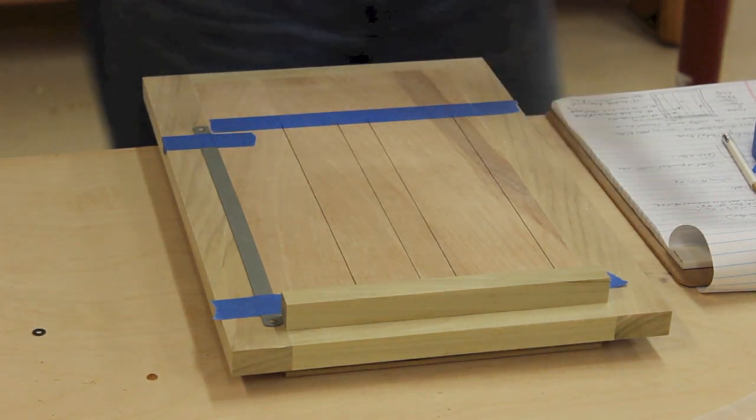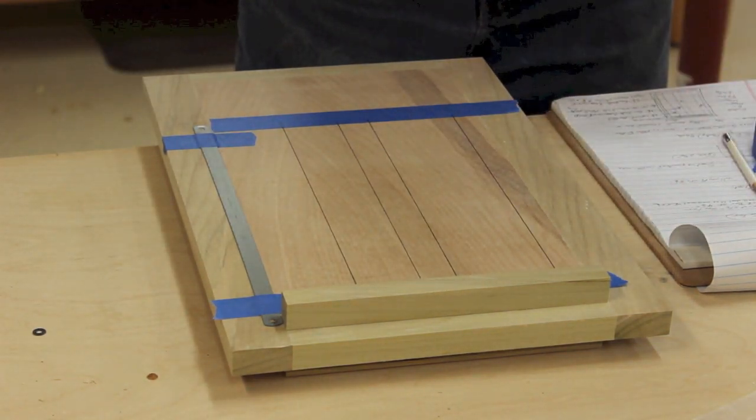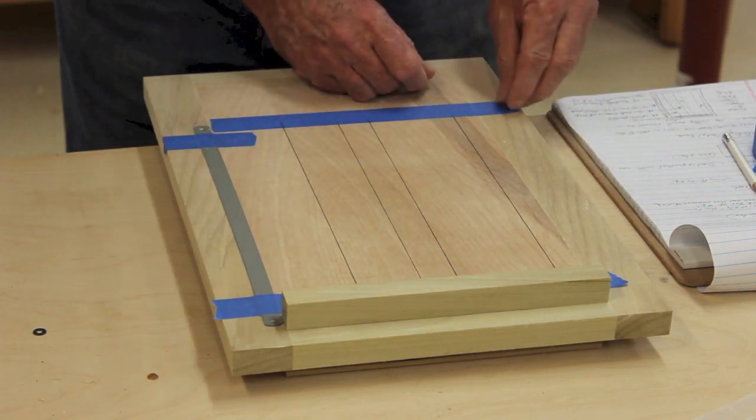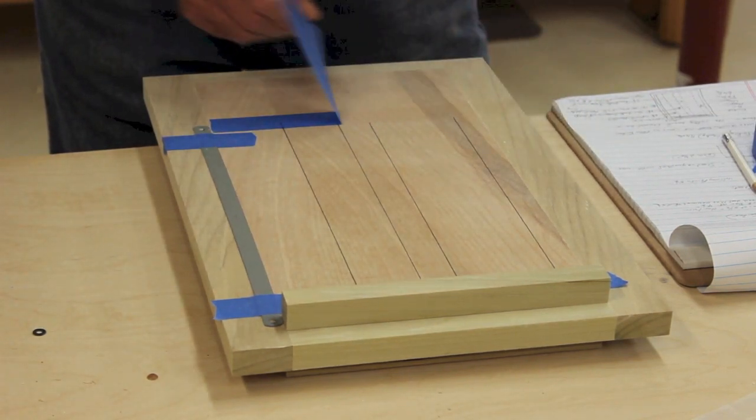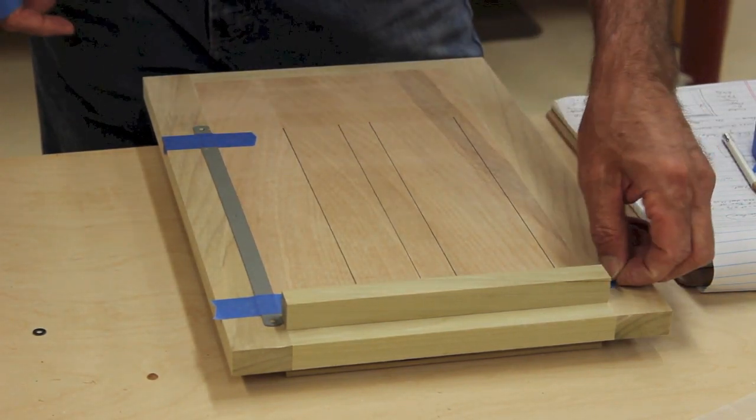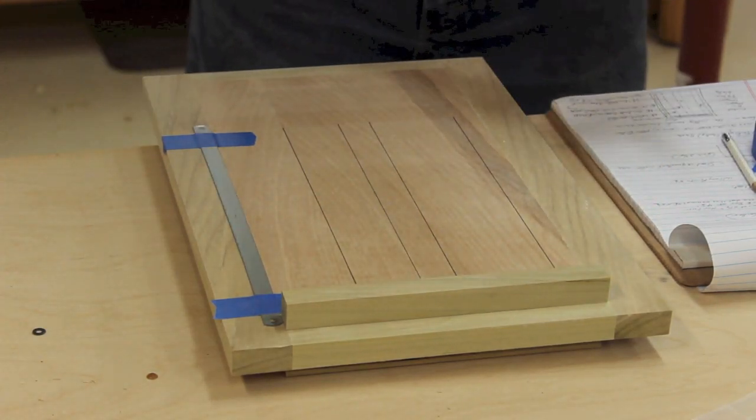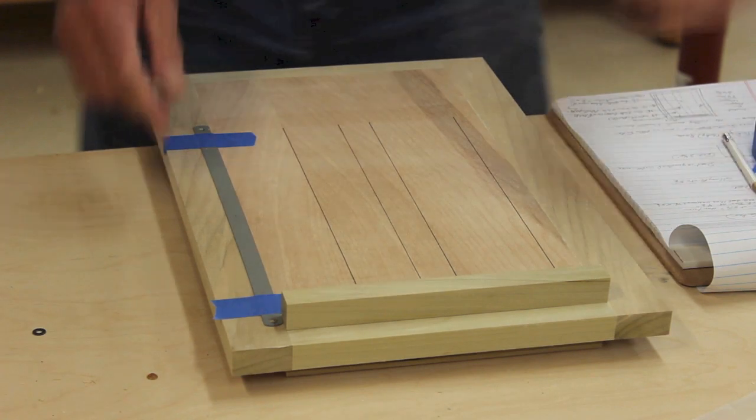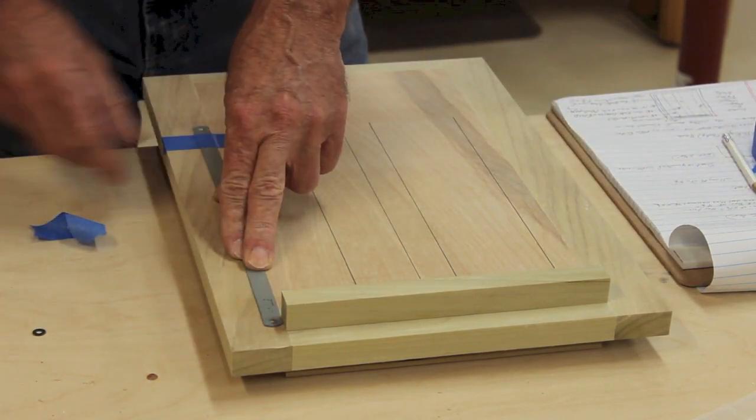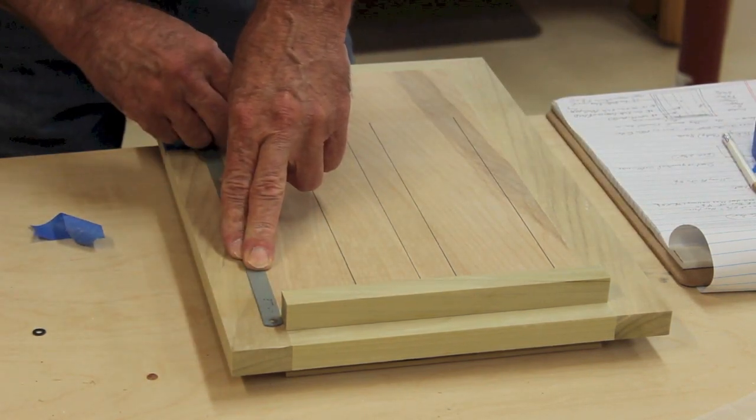This should accommodate any size sheets of sandpaper that you like to use. But if you like other sizes, draw additional lines. With the lines marked out on there now, I can remove the tape. I have nice sharp ends. I've got little pencil marks here I've got to get off, but that's okay.